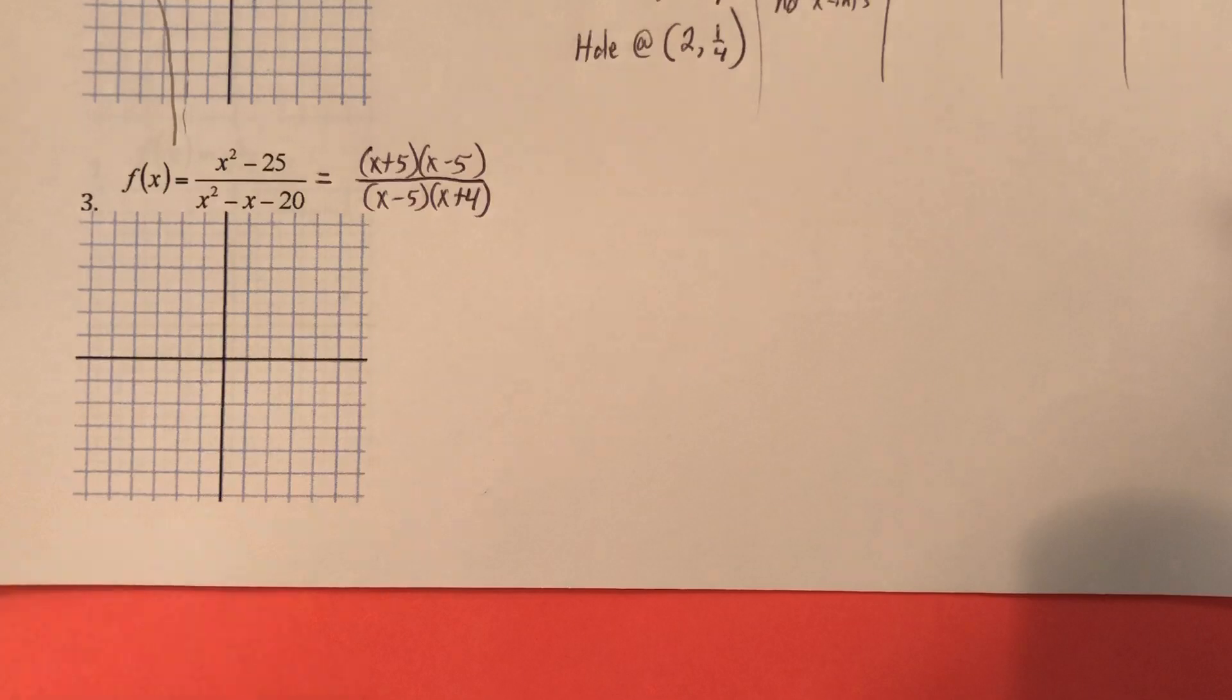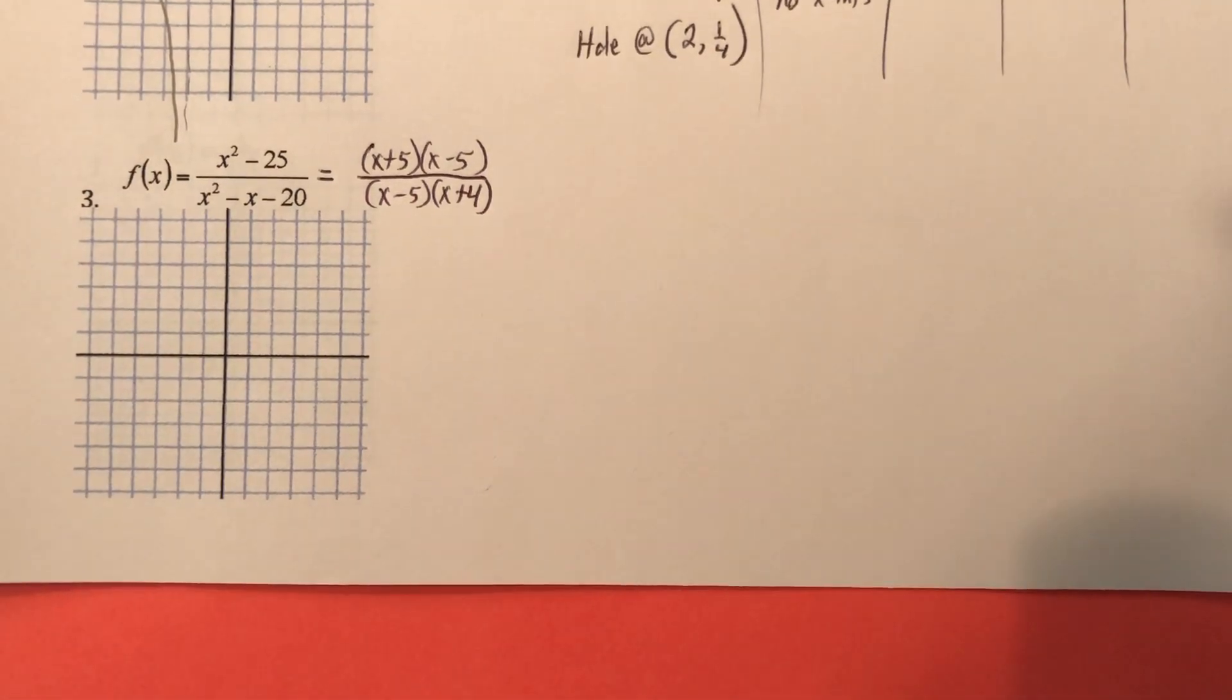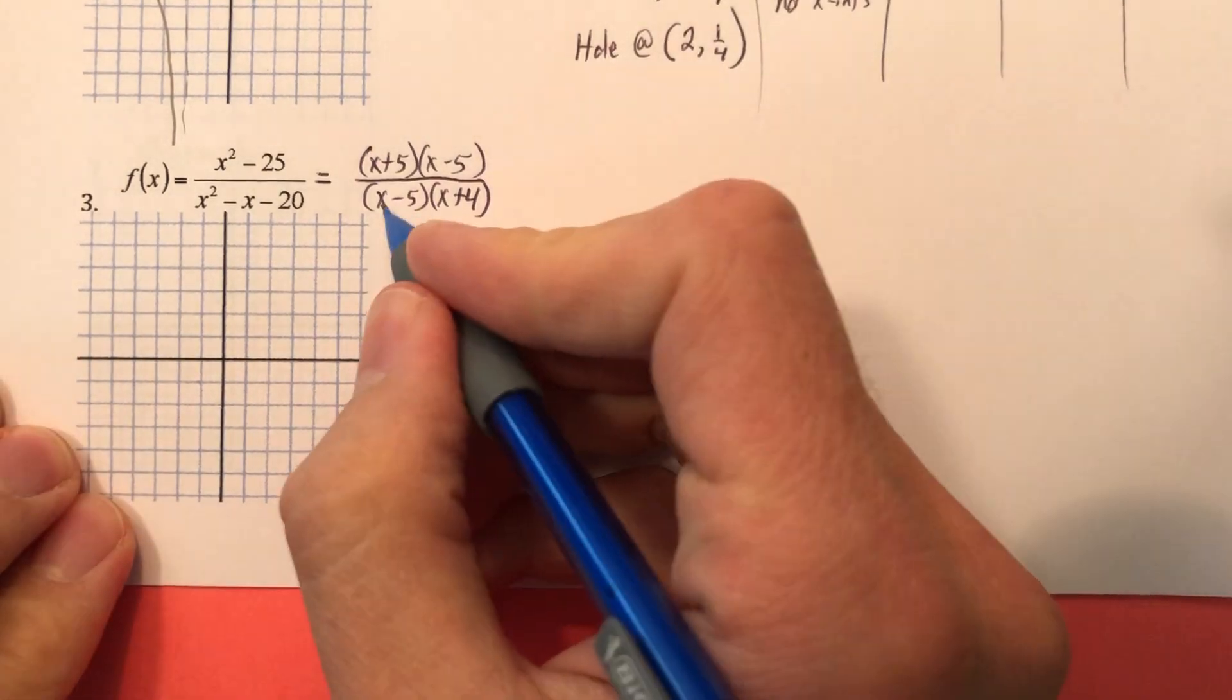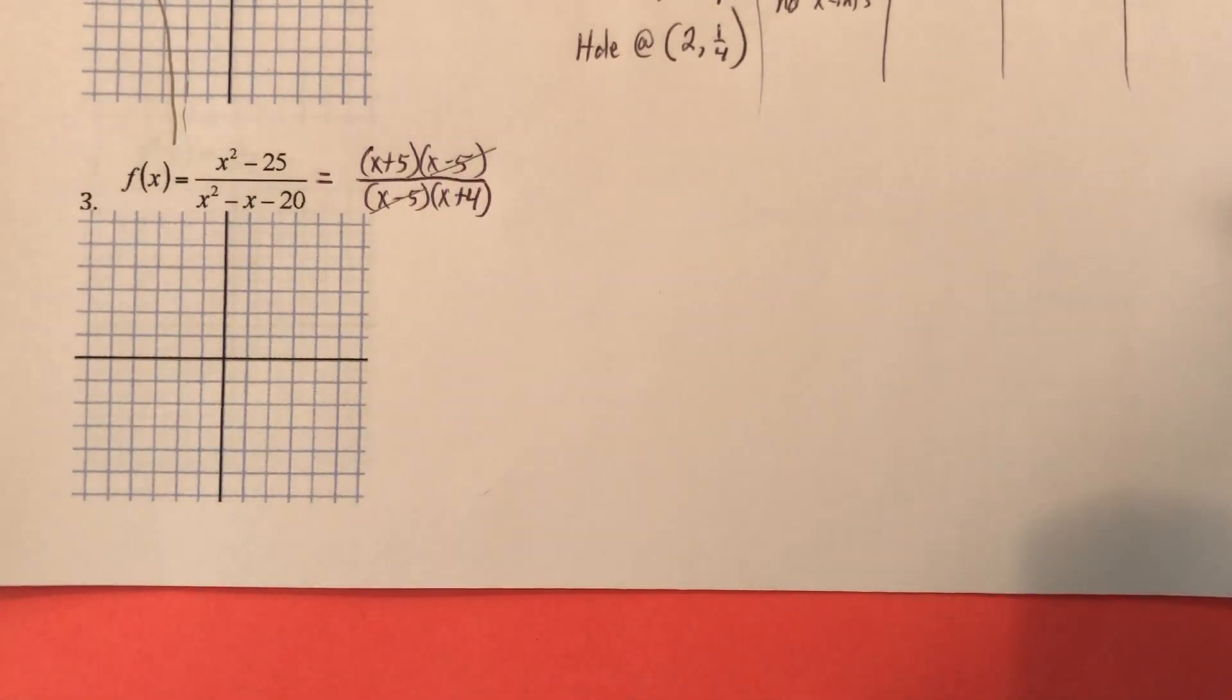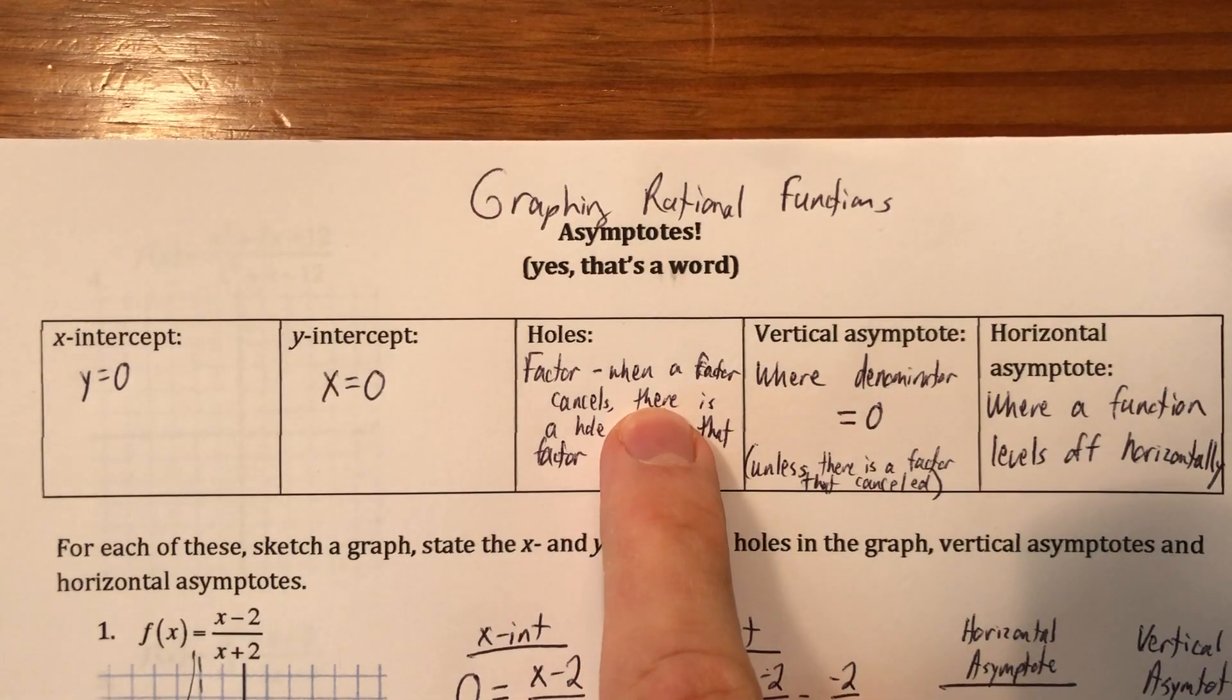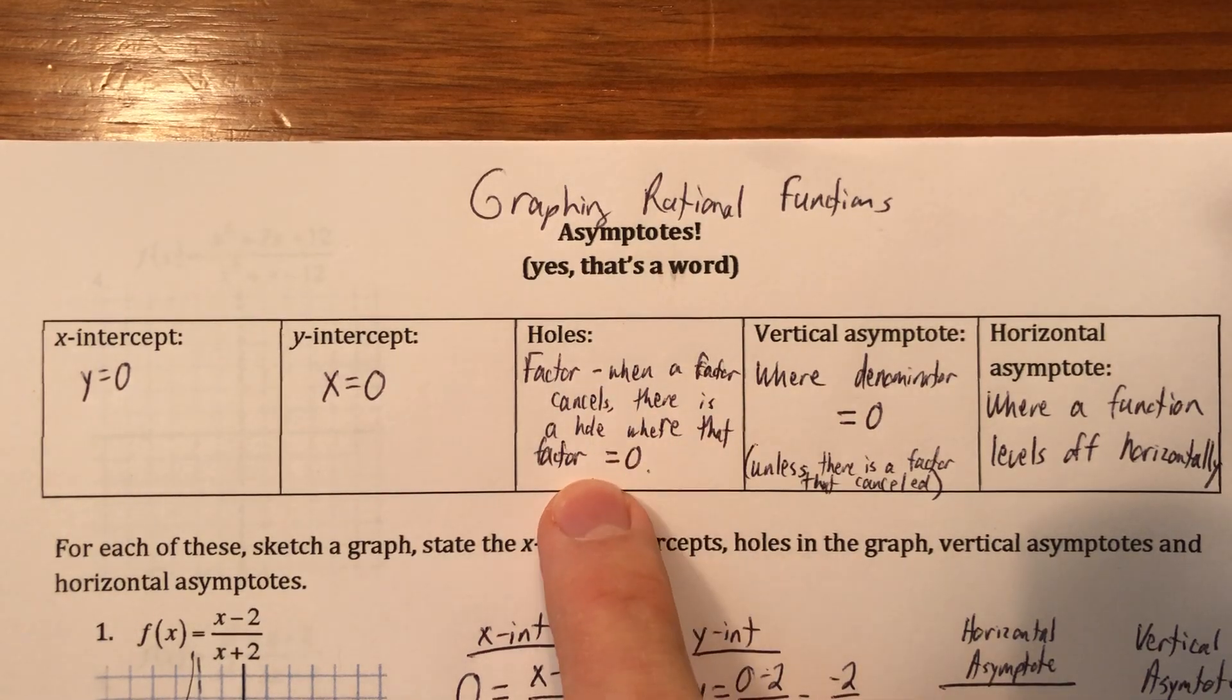And I think you notice what I notice, and because we notice that, I think we should do something about it. And in addition to that, we should also mark those out. So when we mark those out, that means we have just created a hole. So when a factor cancels, there is a hole where that factor equals 0.